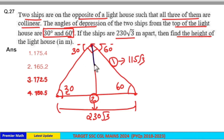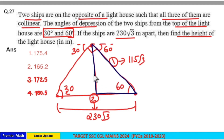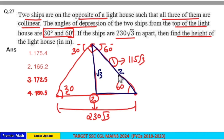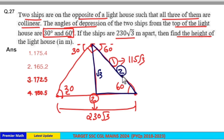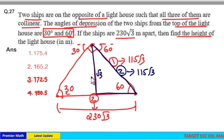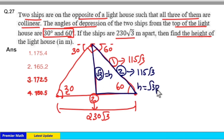Now take the right-hand side right angle triangle. From this triangle, sin 60 equals √3/2, so the opposite side and hypotenuse are in the ratio √3:2. We already know the hypotenuse length is 115√3 (constant), so from this, 2 parts equals 115√3, and the √3 part is the height.